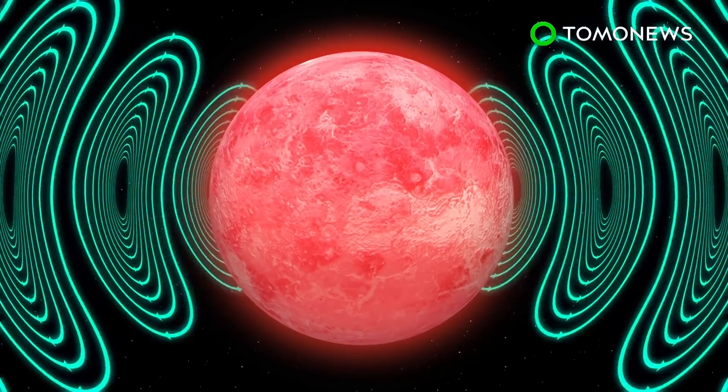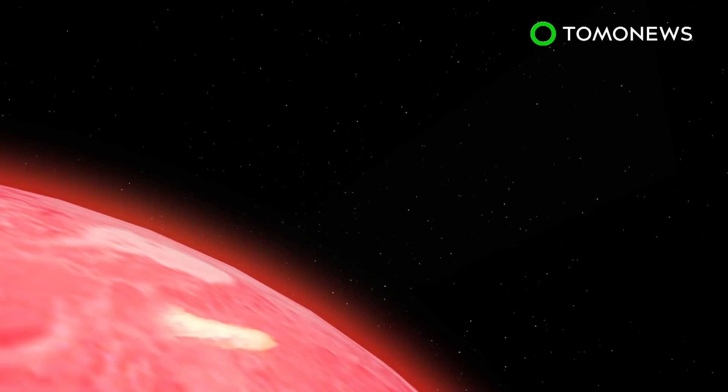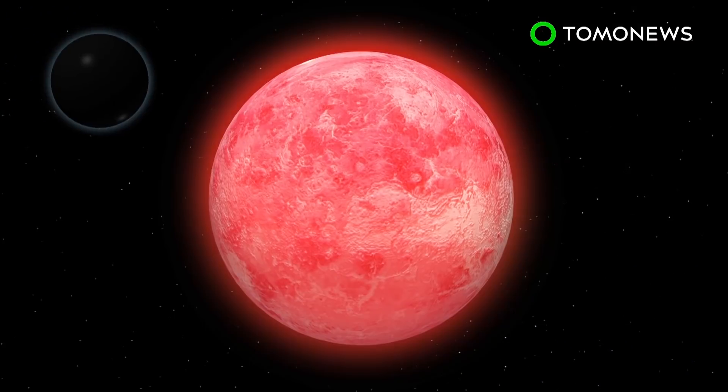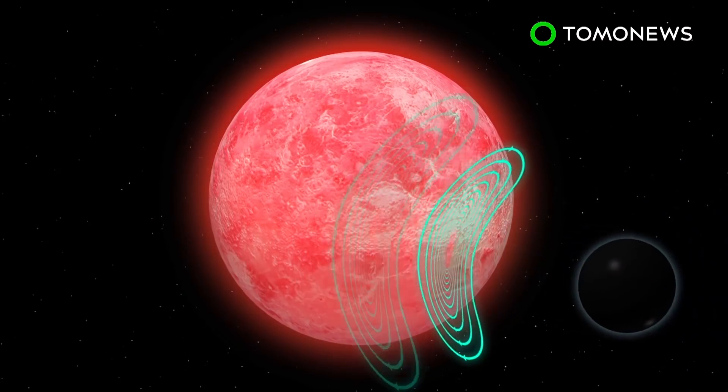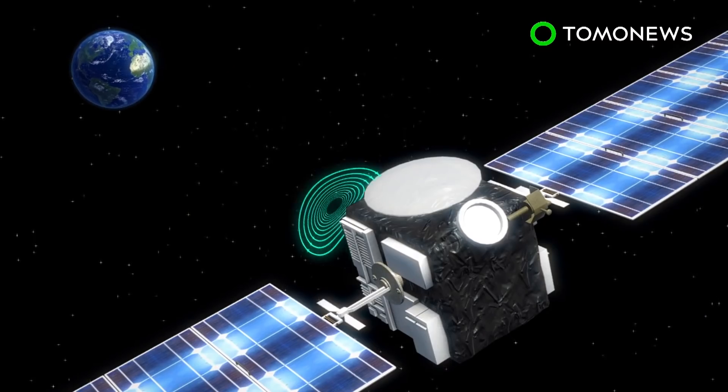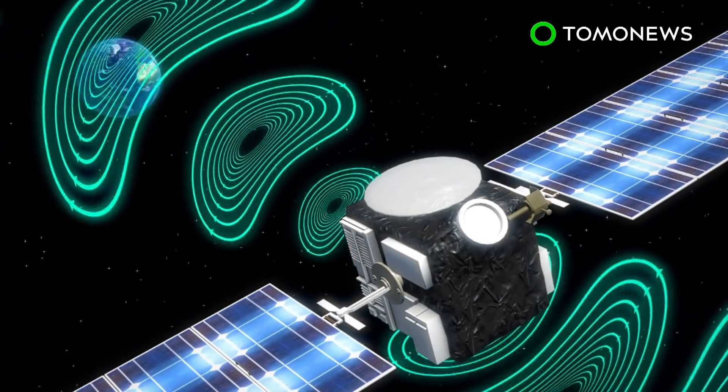The Aricibo Observatory in Puerto Rico discovered peculiar radio signals coming from the star Ross 128 in the Virgo constellation. Scientists say the reason for this could be one of three things. The signals could have originated from a solar flare, from something else passing in front of the telescope's view of Ross 128, or it could simply be a radio burst from a high-orbit satellite.